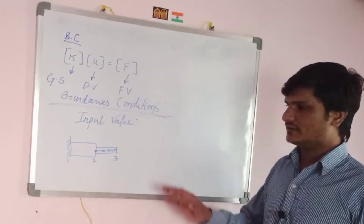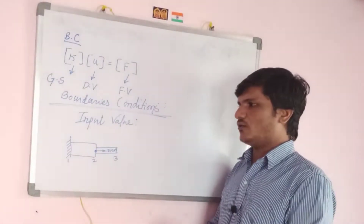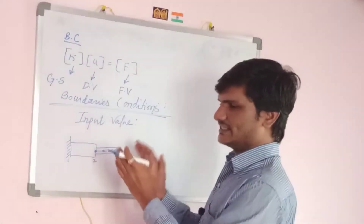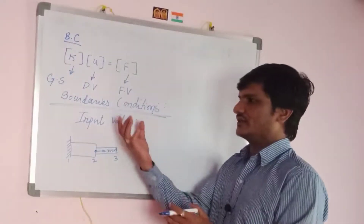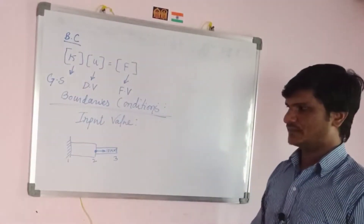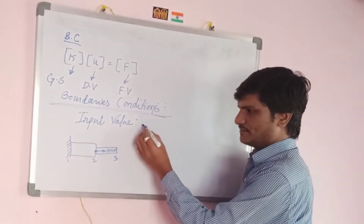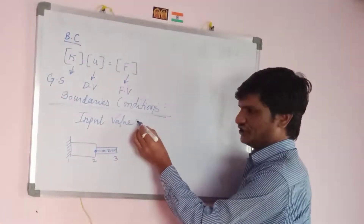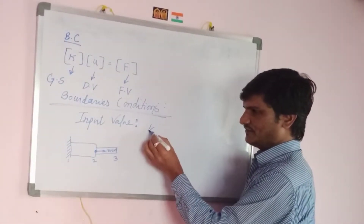In this first case, suppose a force of 10 kilonewtons is applied at the bar. Based on this problem, how do you calculate the boundary conditions? When the element is fixed, we consider the displacement condition.